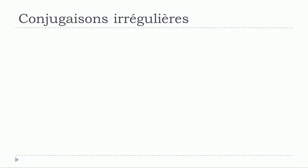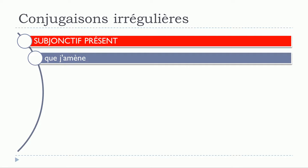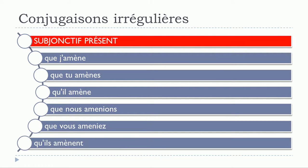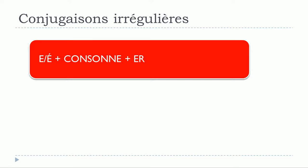Let's see now the last one, the subjonctif présent: que j'amène, que tu amènes, qu'il amène, que nous amenions, que vous ameniez, qu'ils amènent. We can see that the modification affects only je, tu, il, and ils at the plural form. For nous and vous you don't touch it — amenions, ameniez — and then here the modification returns for ils: amènent.